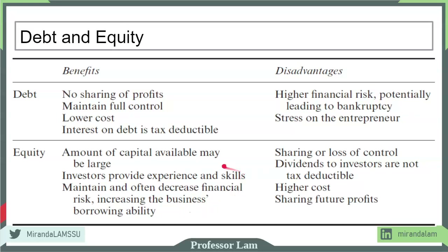The downside of bringing in an outside equity investor is that you have to share control, which can be a major consideration for an entrepreneur. In addition, you have to share future profit and the cost of equity is typically higher than the cost of debt. If you use the corporate C-corp form, dividends paid to investors are not tax deductible. You can stay as an LLC, in which case the tax disadvantage is not as significant for using equity.